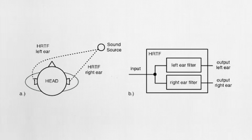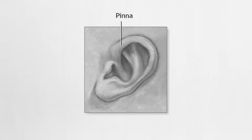The head shadows sounds, altering the frequency balance of sounds between the left and right ear. In addition to this, the outer ears — particularly the pinna — interact with sounds differently depending on the angle of incidence. These effects allow us to localize sounds not only on the horizontal plane, but also vertically, and that's the final feature that sets binaural microphones apart from standard stereo techniques.